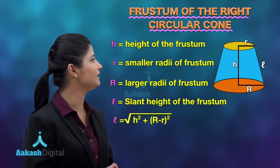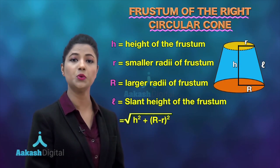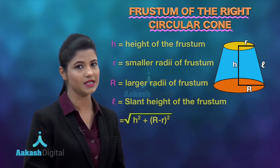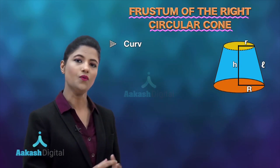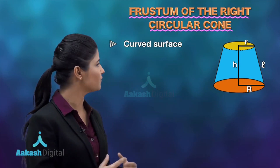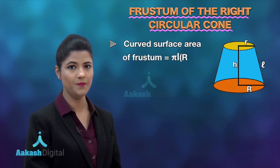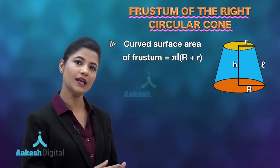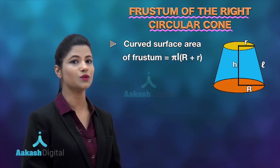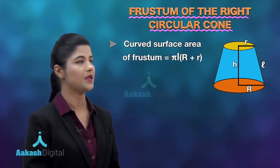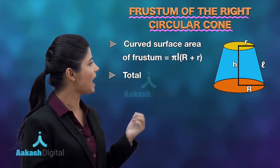Once you have obtained the slant height, you can use it to find the curved surface area of the frustum. The curved surface area is given by the formula: π × l × (R + r).